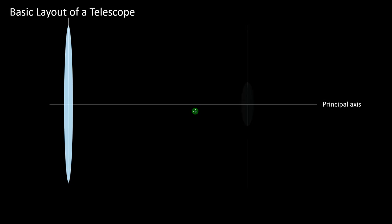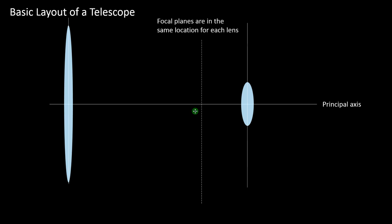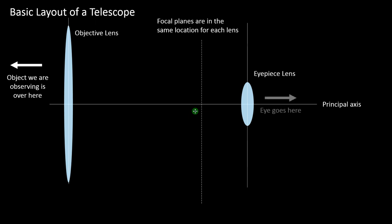To start with, we need to understand the basic layout of a telescope — it's a two-lens system. You have one lens and a second lens with their principal axes aligned and their focal planes in the same plane. The first lens is called the objective lens, pointed at the object, and the second is the eyepiece lens, where you put your eye.